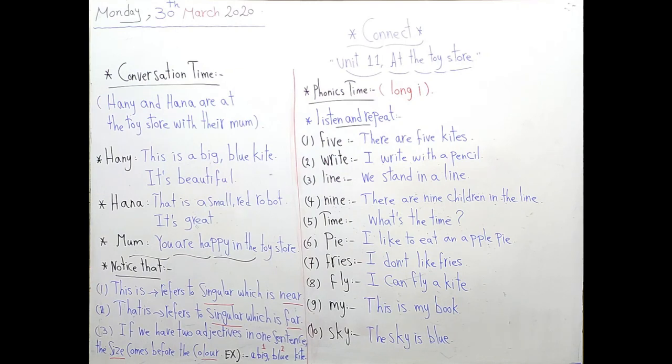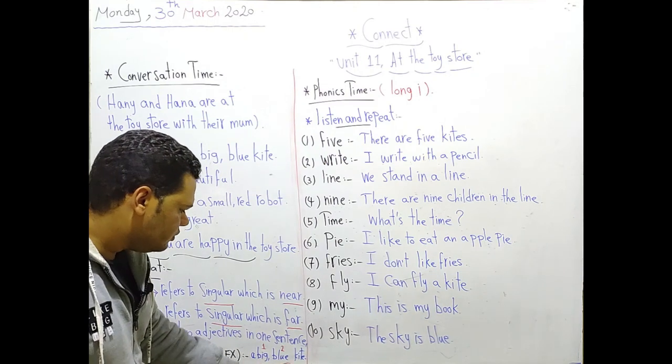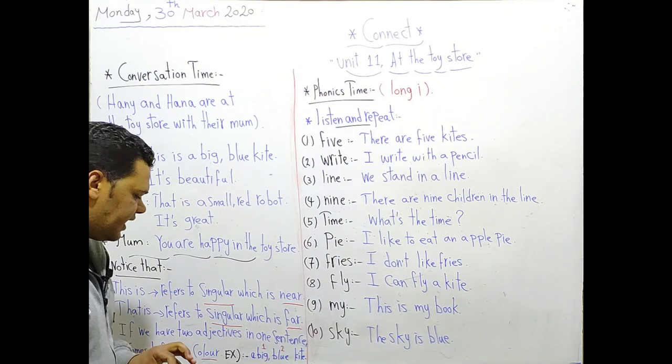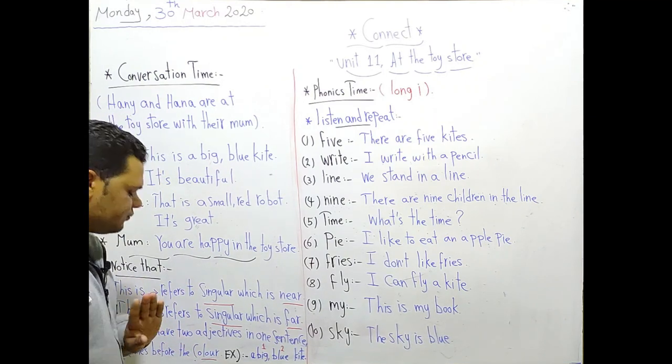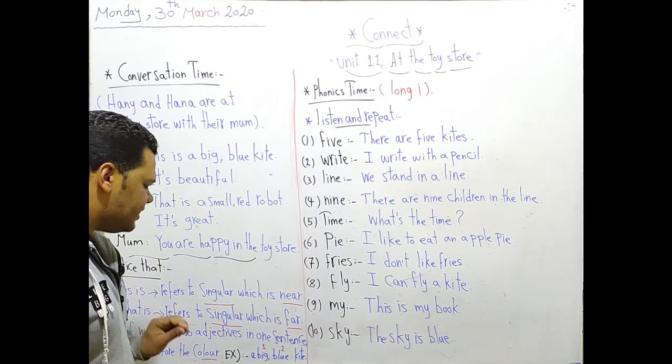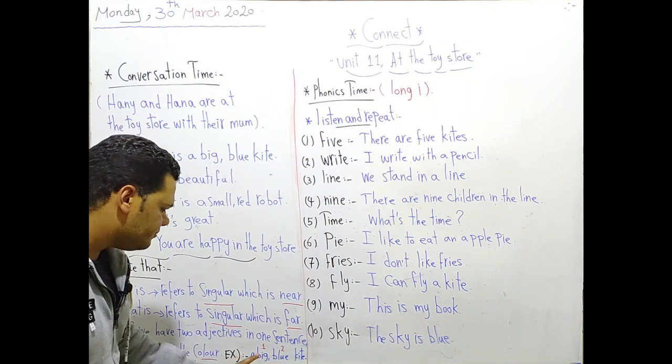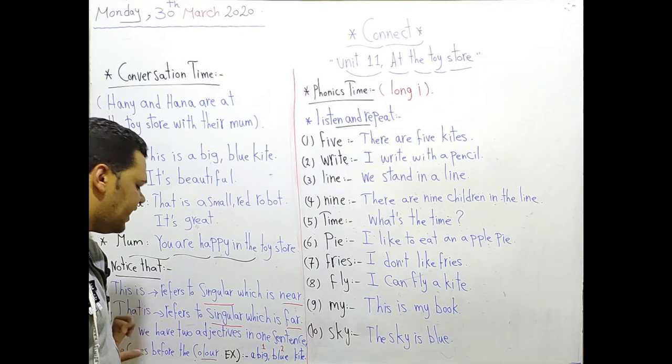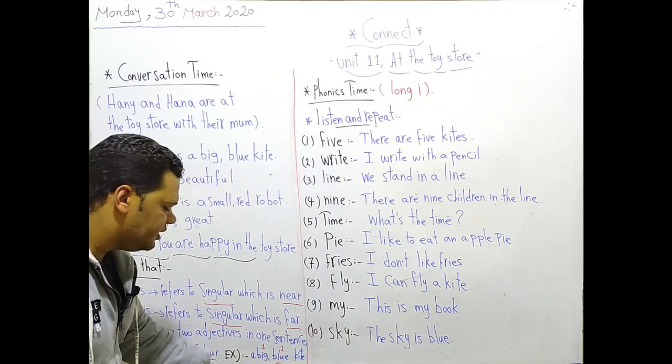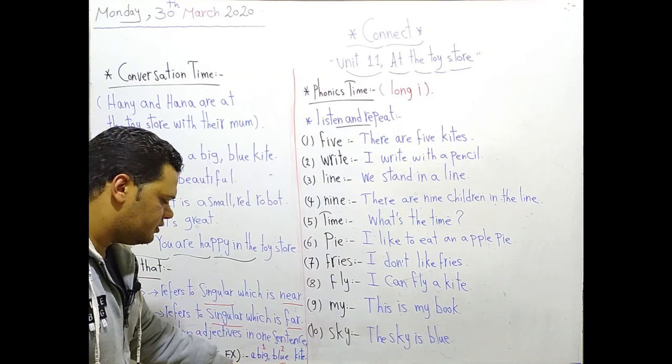Number three. If we have two adjectives in one sentence, the size comes before the color. For example, a big blue kite. We can't say a blue big kite, it's false. We must say a big blue kite. So number one will be big, which is the size. Number two will be blue, which is the color.